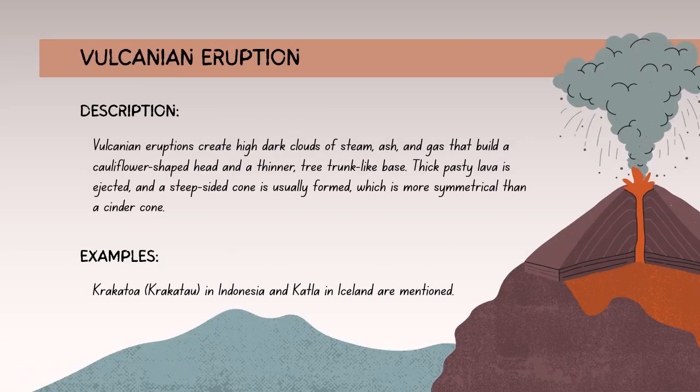A Vulcanian eruption is a more explosive type of volcanic activity compared to Strombolian eruptions. It involves the ejection of large volumes of ash and volcanic debris, often forming a dense ash column. Vulcanian eruptions are named after the Roman god Vulcan and are associated with viscous magma that traps gases, leading to pressurized explosions. These eruptions typically result in the release of pyroclastic flows and can be hazardous to nearby areas.